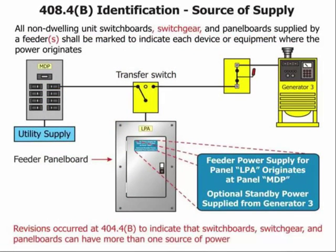Still in Chapter 4, for non-dwelling units: if a panel has more than one source of electrical supply—for instance, tied to both the utility and a generator via a transfer switch—a label must now be placed on the panel indicating that optional standby power is supplied from a specific generator. During normal operation the utility provides power, but if the utility fails and the generator kicks in, this label is especially important for troubleshooting or maintenance during a transfer.